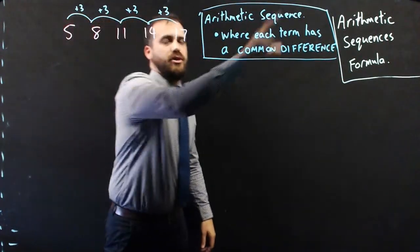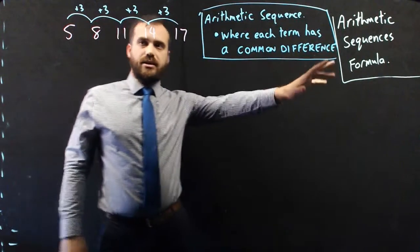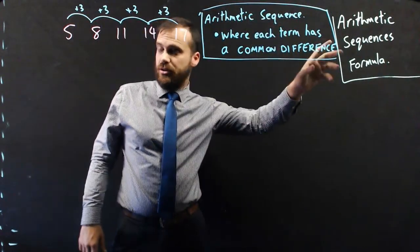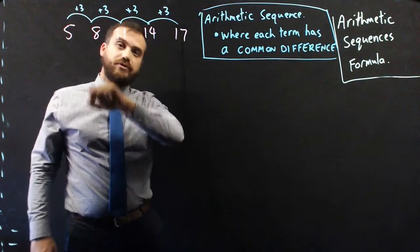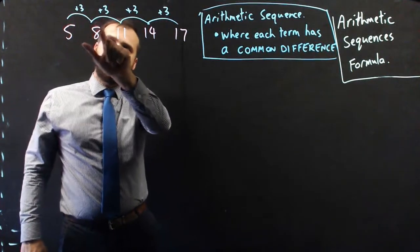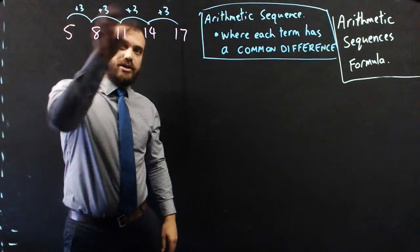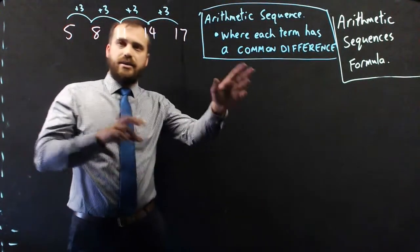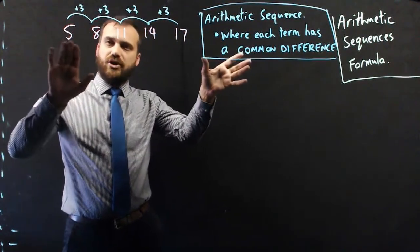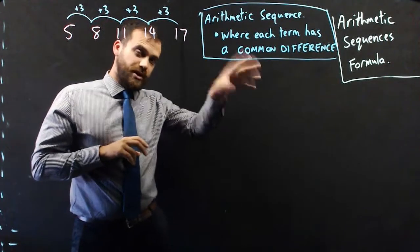So, if we had to jump 100 times to get to term 100, actually, we only have to jump 99 times. Then, as long as we can take 3 and multiply it by 99, and then add that number to 5, we should be able to find the 100th term.